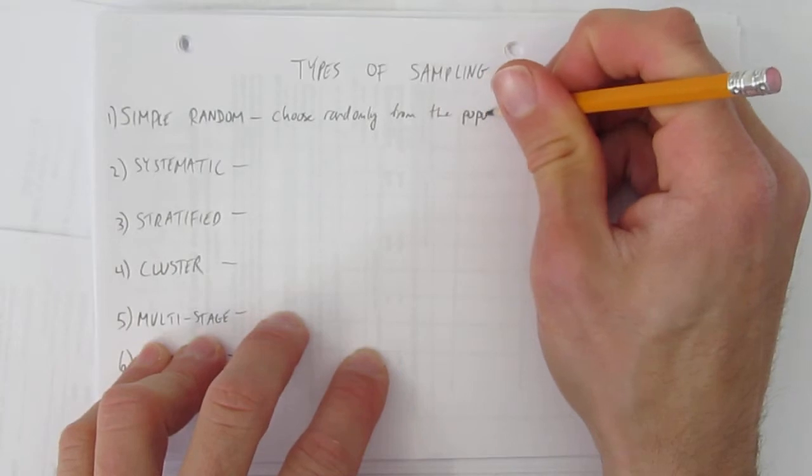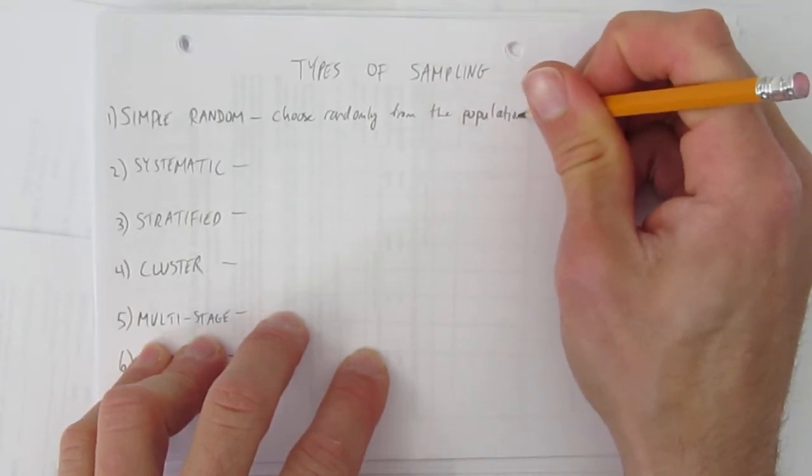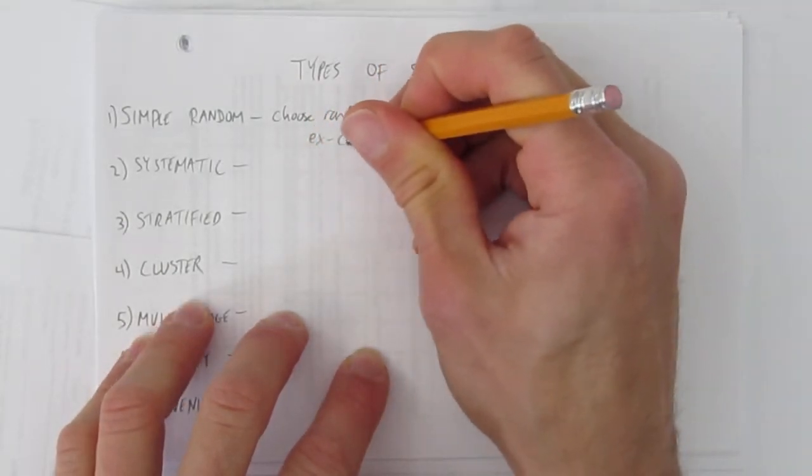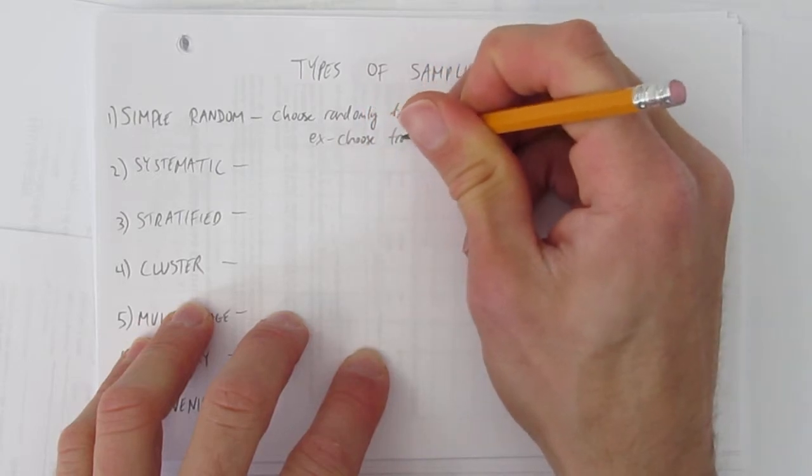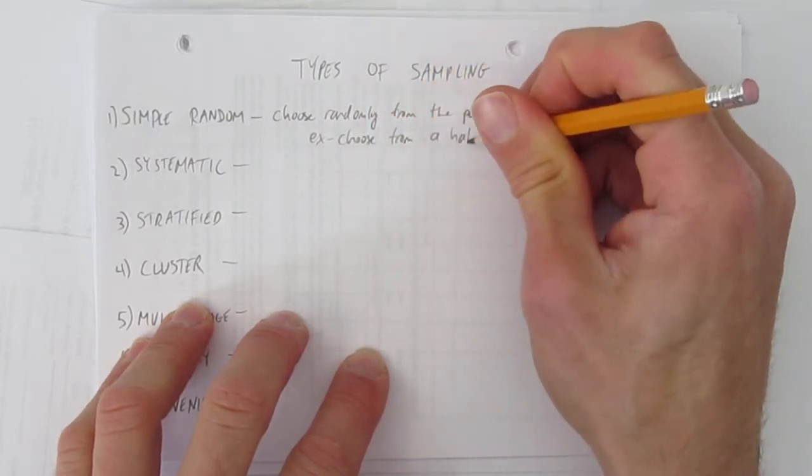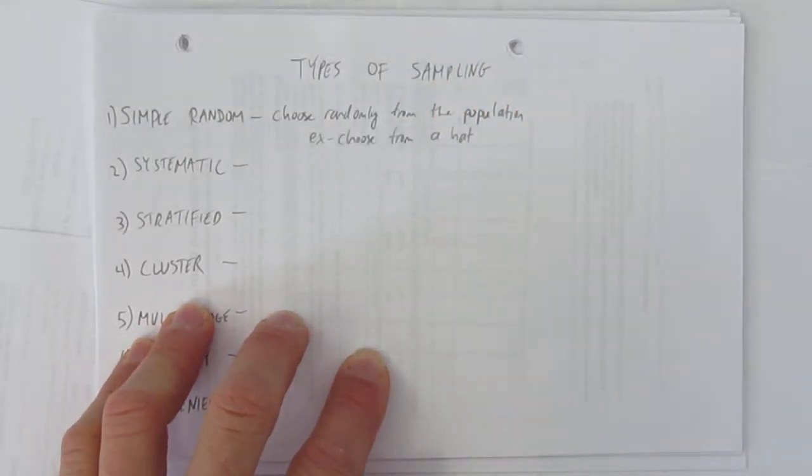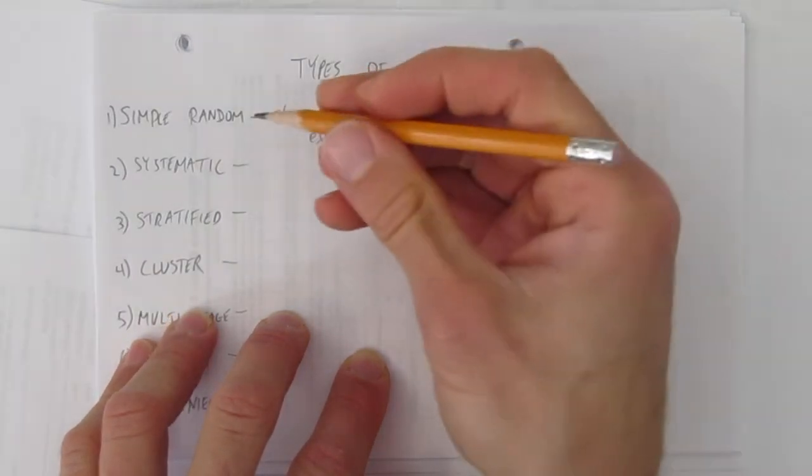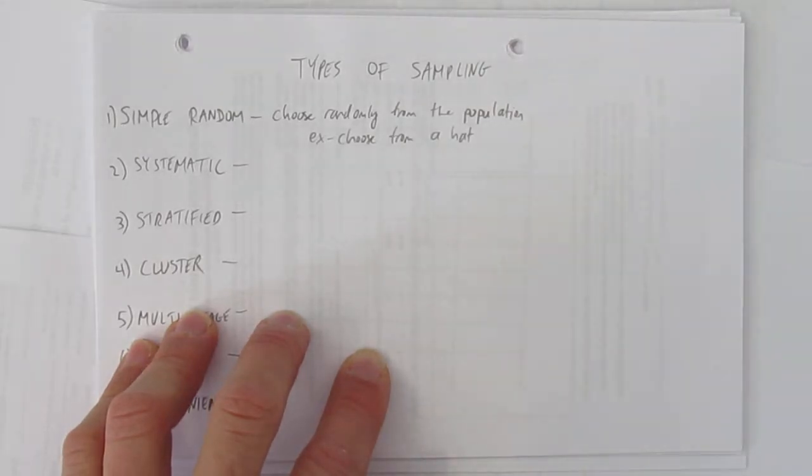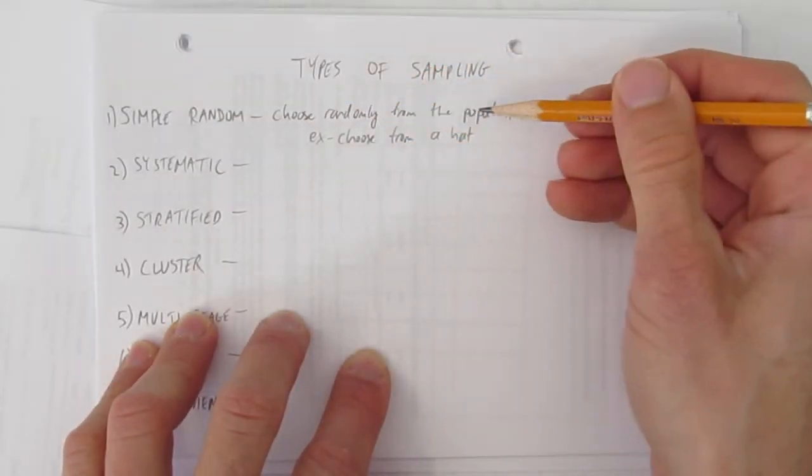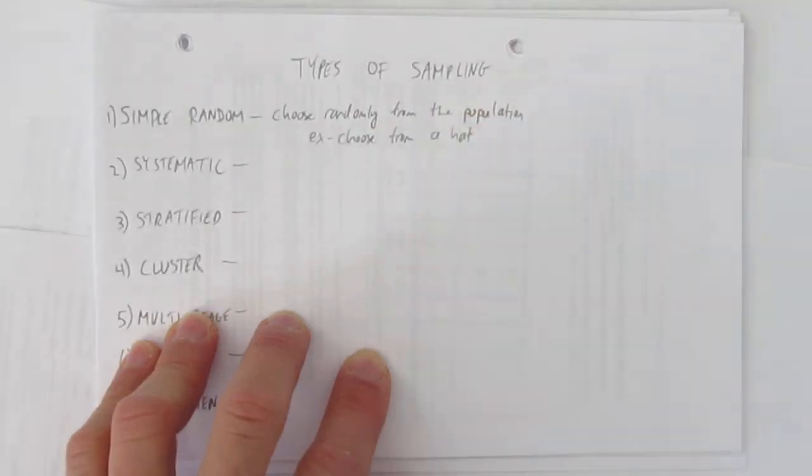That's actually harder to do in practice than it seems. So for example, you could choose names from a hat. But if you do, you have to make sure that all the names in the hat are the exact same size and that the hat is well mixed. More often, with actual samples, they make a random number generator that randomly chooses people or items in the population. So what's simple random? Choose truly randomly from the population. Example, choose from a hat.